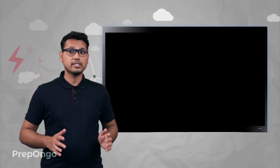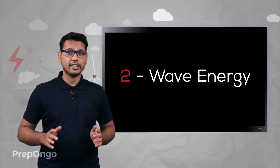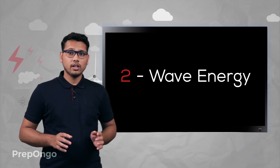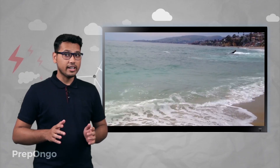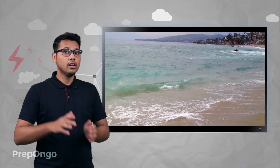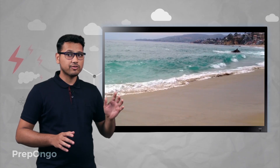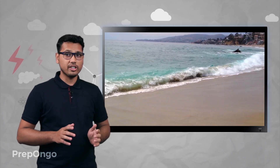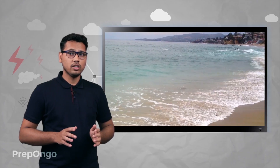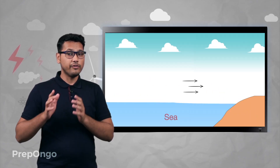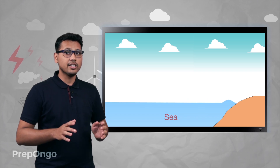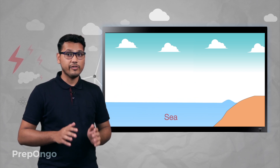Now let's learn about the second form of ocean energy, that is wave energy. You might have seen that waves form in the ocean and they hit the shore with a very great force and a loud noise. These waves originate in the ocean and they are destroyed on the shore. The wind energy transfers its energy to the surface water of the ocean and hence waves are generated.